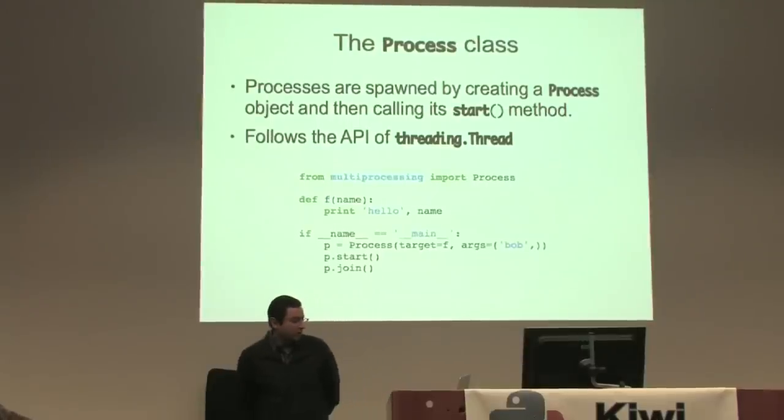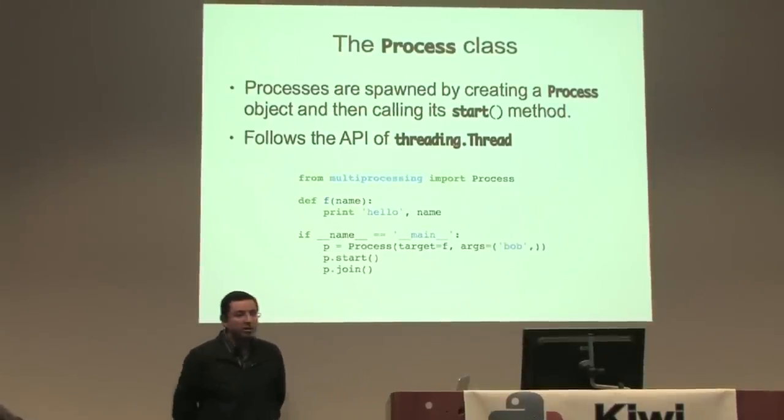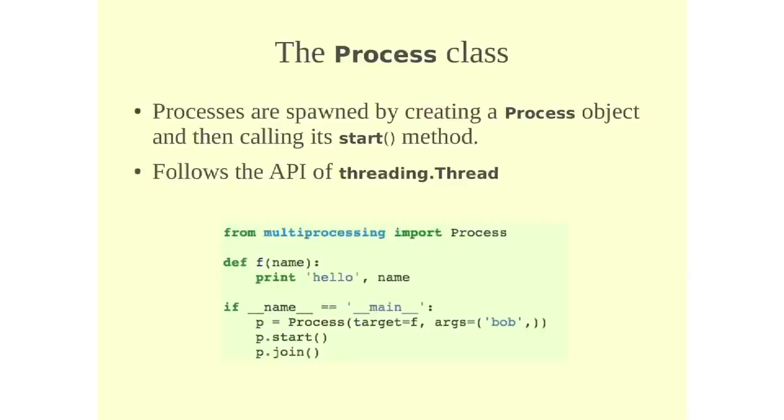I'm going to explain how the basic API works. So we've got the process class. The process class is what you use to tell Python that you want to run a certain executable or a certain callable as a separate process. So you create an instance of process. Import process from multiprocessing.